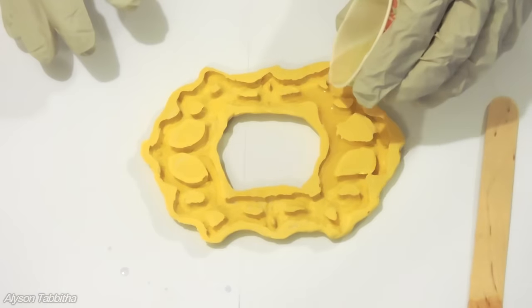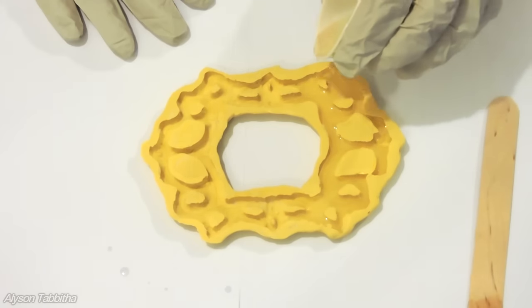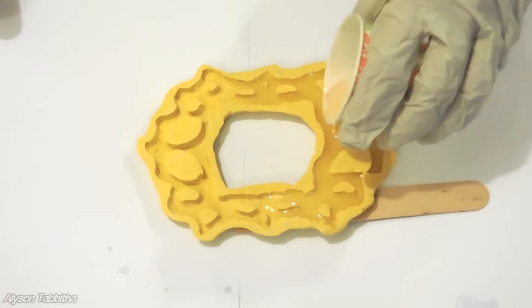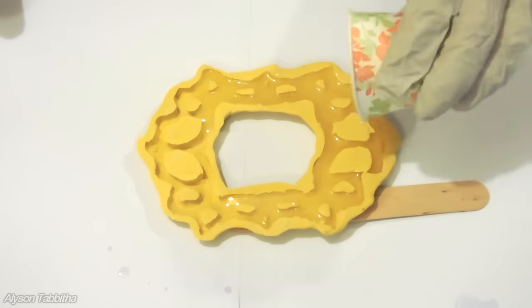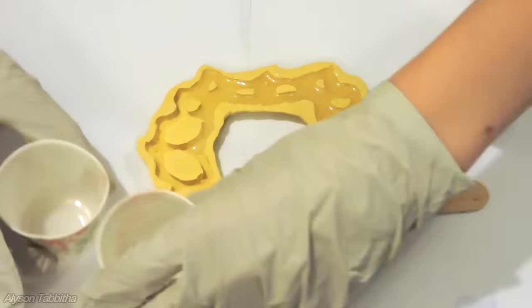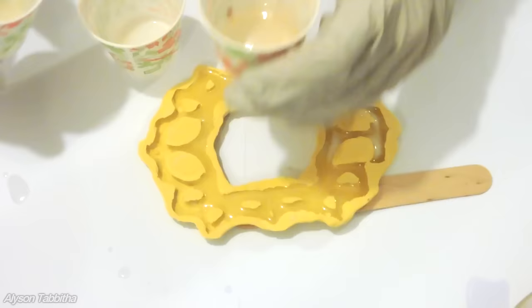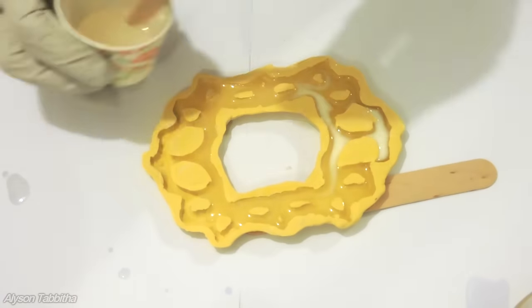Once it's mixed, carefully pour it into the mold. I am using the popsicle stick to balance uneven sides. If you made a big mold and need more resin to fill it, just mix more and pour it in until the mold is full.